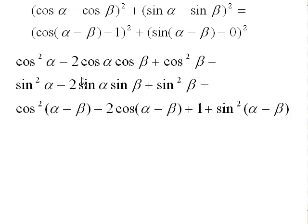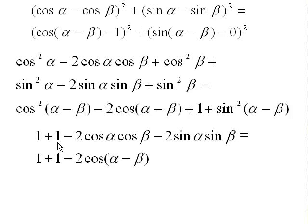The distance formula squared matches on both sides. Now we can simplify. Cosine squared alpha and sine squared alpha are both on the left. Cosine squared beta and sine squared beta are both on the left. Cosine squared of (alpha minus beta) and sine squared of (alpha minus beta) are both on the right. In all those cases, the Pythagorean identity says that combination equals 1. So we get 1 for cosine squared plus sine squared of alpha, 1 for beta, and 1 for (alpha minus beta), and the 1 that was already there is still there.